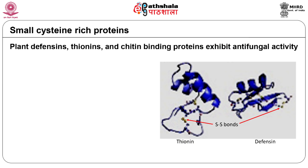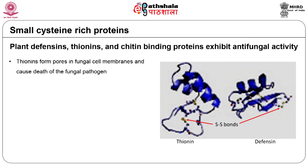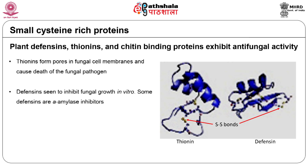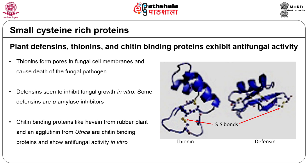The small cysteine-rich proteins such as plant defensins, thionins and chitin-binding proteins exhibit antimicrobial activity. The antimicrobial action of thionins is due to their ability to form pores in cell membranes, resulting in membrane disruption and cell death. Plant defensins are of various types. One group shows antifungal activity against various fungi in vitro. Another group consists of alpha-amylase inhibitors which affect the activity of pathogen alpha-amylases. Hevein, a non-enzymatic chitin-binding peptide from latex of rubber trees, and agglutinin from Urtica are chitin-binding peptides known to have antifungal activity. They have two chitin-binding domains and have been shown to inhibit fungal growth in vitro.